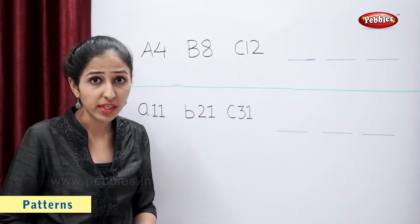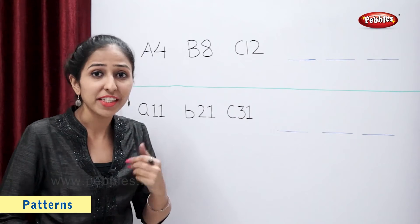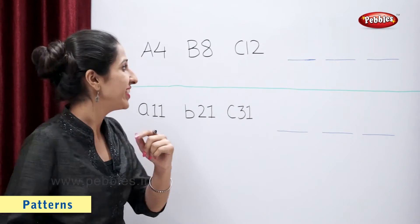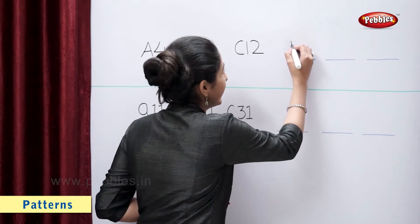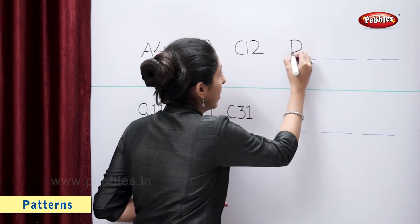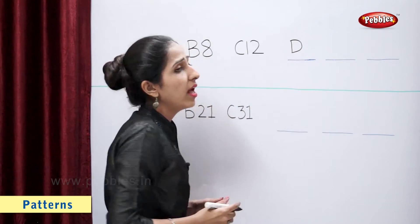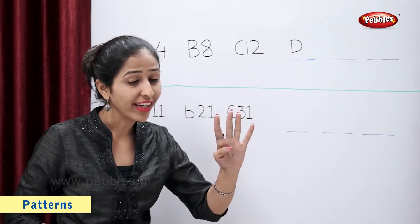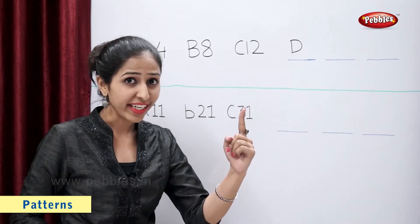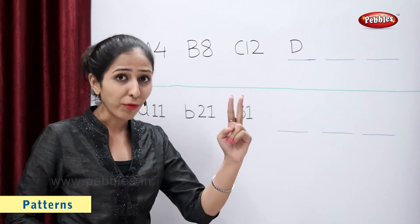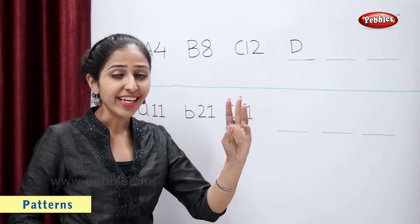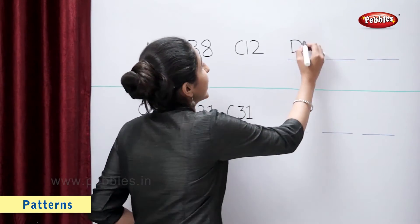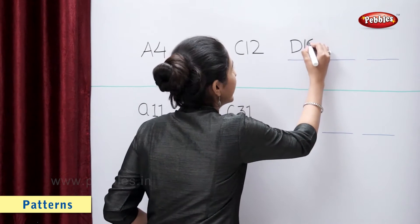So, tell me students, which is the next letter in the series? Correct! Letter D. And how much is 12 plus 4? That is 13, 14, 15 and 16. So, our next number is 16.